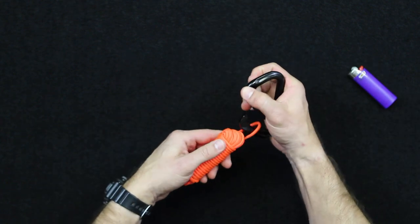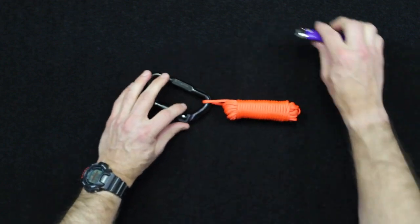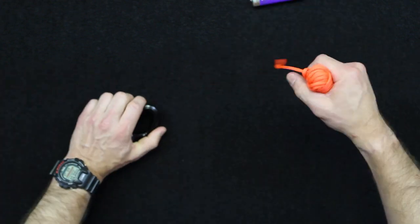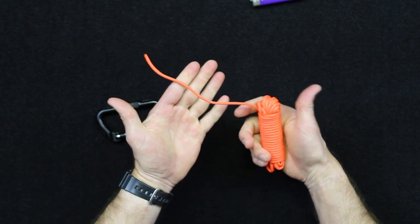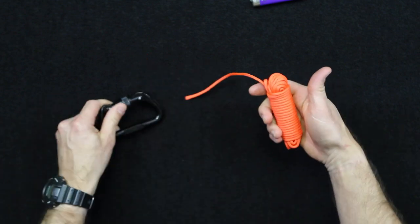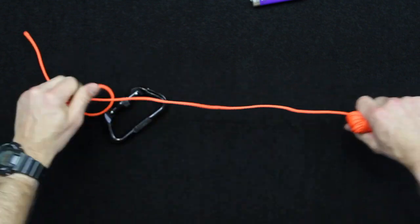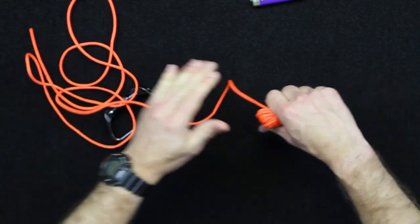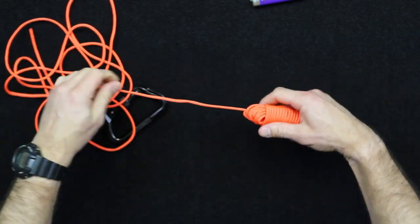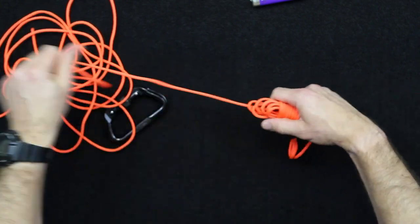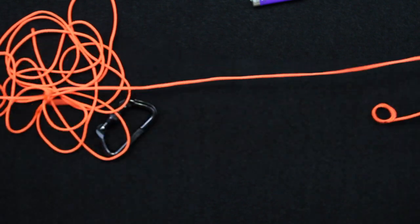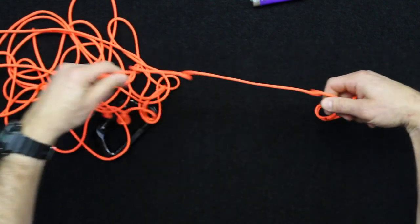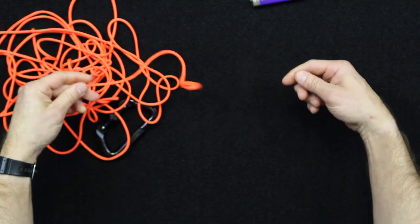So now when you hook this up to your carabiner, and you go to pull it, you'll pull it, it'll basically cut away from the carabiner you're holding it onto. And then you just simply pull it through like this. So this is 25 feet of paracord, and if you kind of hold it in your hand like that, it should all come out just fine without getting tangled.